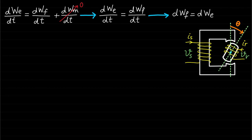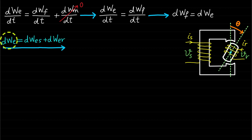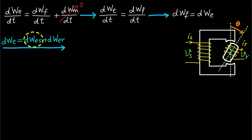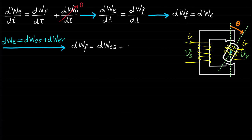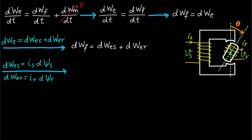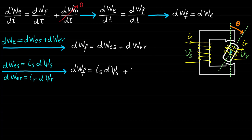Since this magnetic circuit has two electrical sources or two coils, the change of electrical energy dWe will equal the sum of the change of stator electrical energy dWes and the change of rotor electrical energy dWer. Therefore, the change in field energy DWF can be represented as DWF = Is·dΨS + Ir·dΨR.